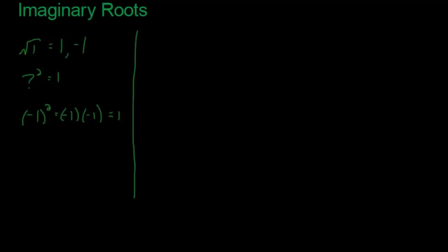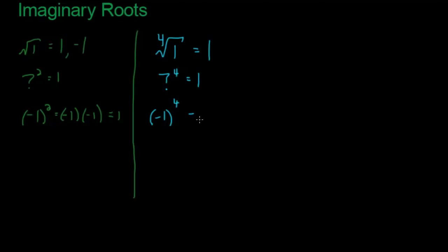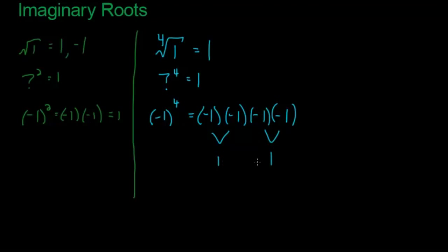Let's move on to something more interesting. What are the fourth roots of one? That question is really asking: what to the fourth power equals one? Well, one is still an answer, because one times one times one times one is just one. And negative one is also an answer — negative one to the fourth: negative one times negative one times negative one times negative one — the negatives cancel in pairs, giving one.